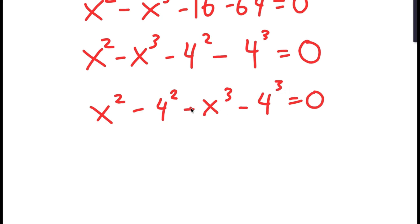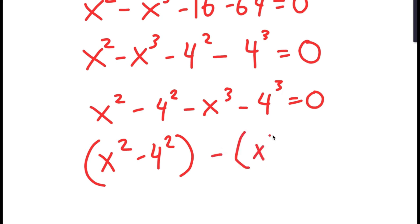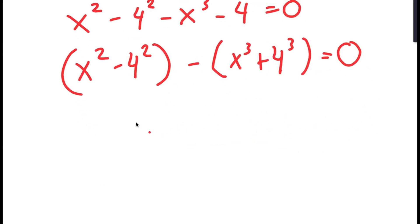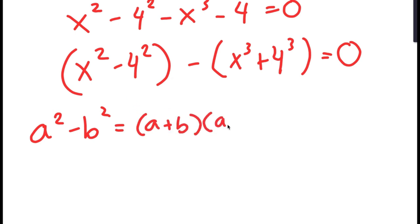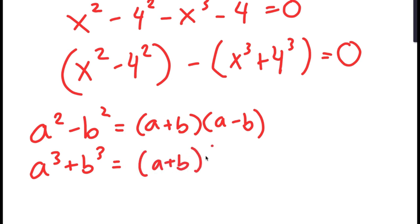There are two properties I'm going to use. I'll write this as x squared minus 4 squared, grouped with minus x cubed plus 4 cubed — we use plus because the negative sign distributes. If I have a squared minus b squared, that equals (a + b)(a − b). And if I have a cubed plus b cubed, that equals (a + b)(a squared minus ab plus b squared).